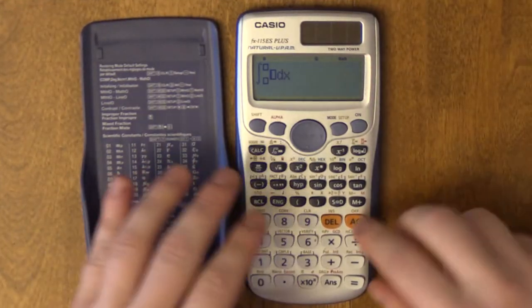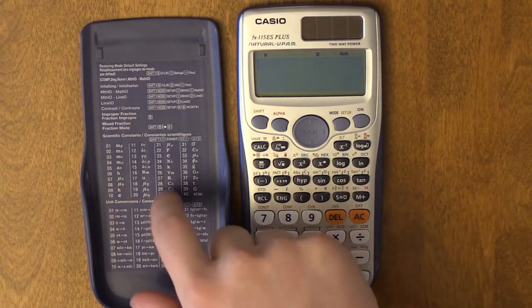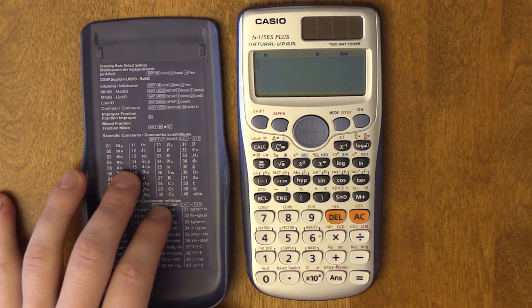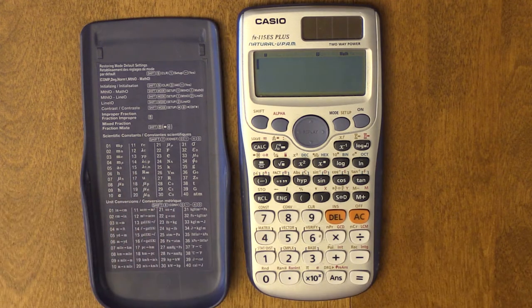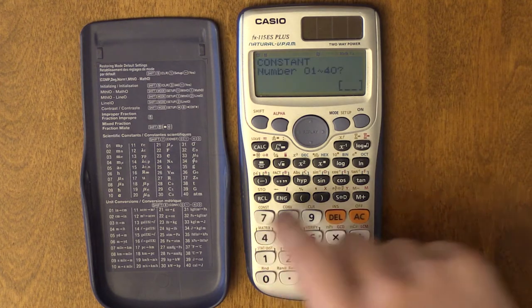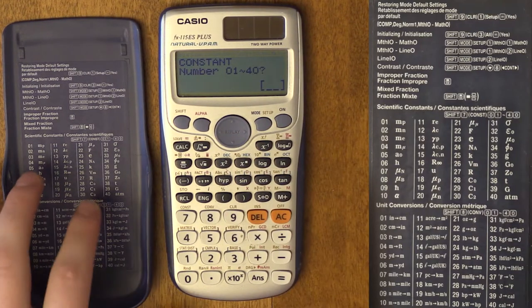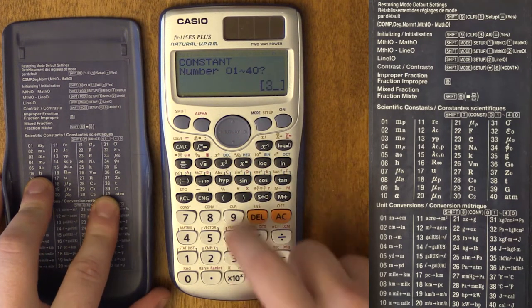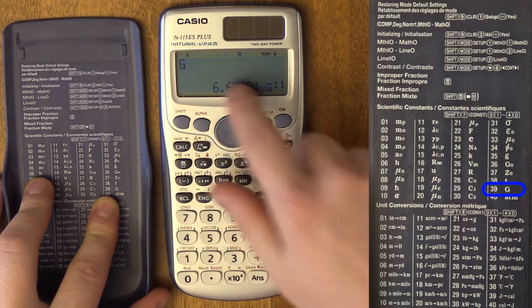Right when you turn it on and take it out of the case, you're going to see over here there's tons of different scientific constants. The way you access all these constants is you go to Shift 7 for constants, and then you enter which number. For example, if I want to enter G, it's 39, click equals, and it'll give you the value of G.